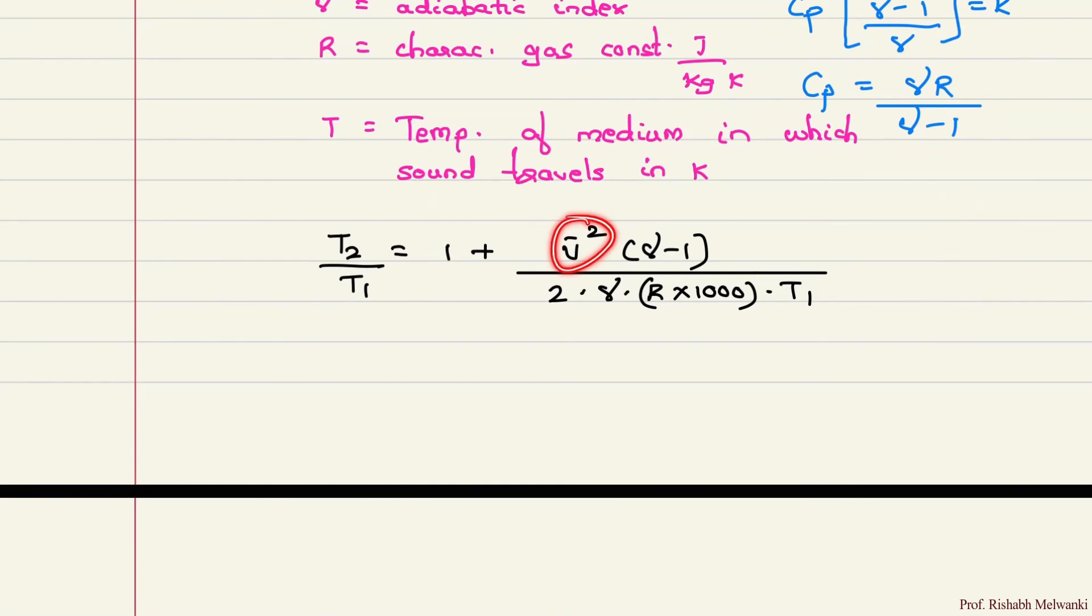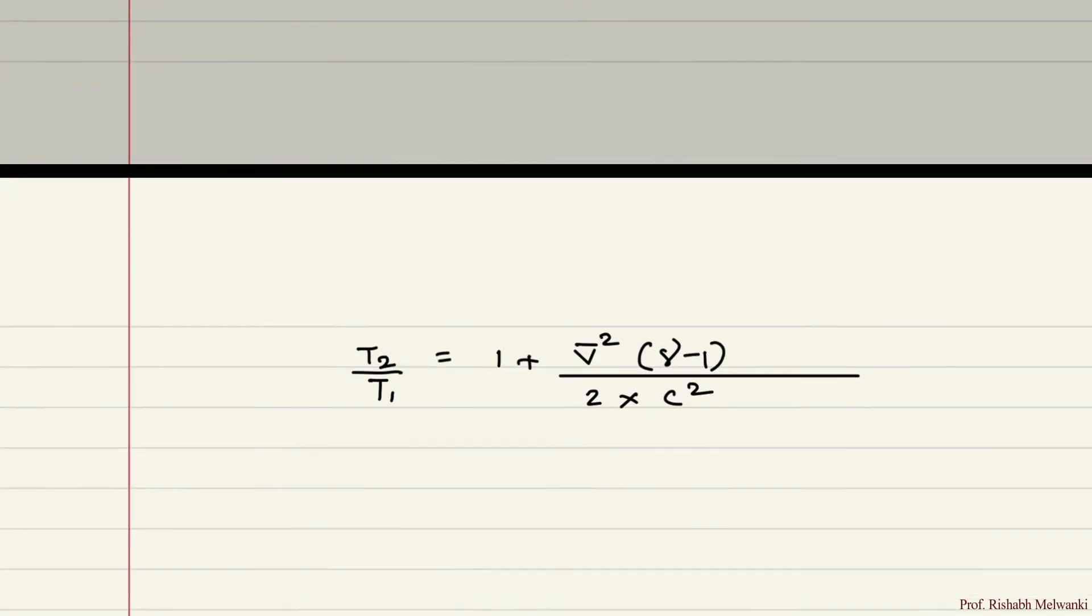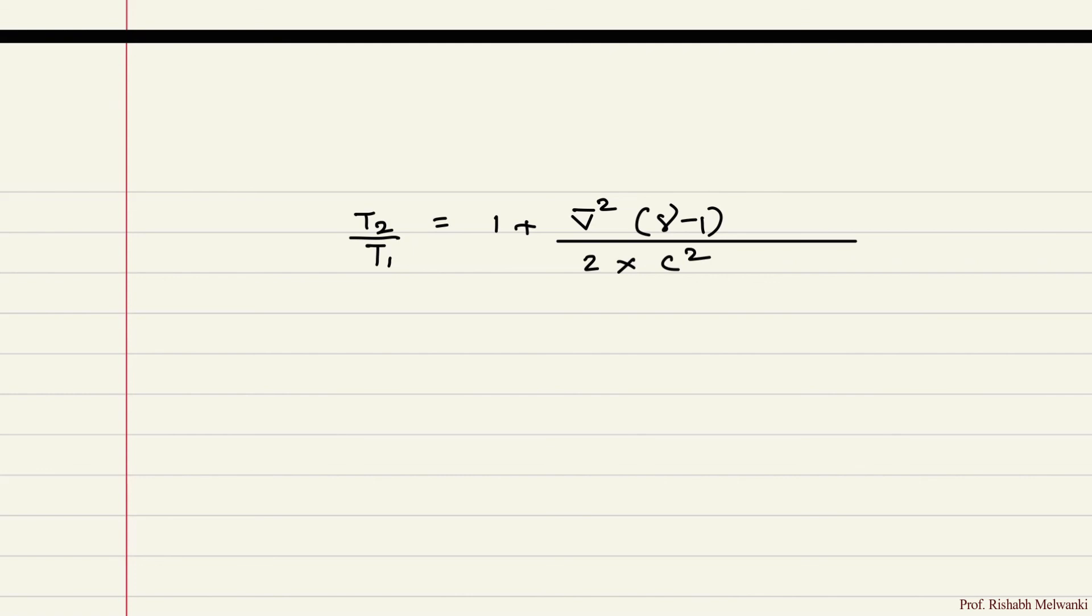Now what is V upon C? It is Mach number. So that term will be M squared. V squared upon C squared will be M squared. So T2 upon T1 is equal to 1 plus gamma minus 1 upon 2 into M squared.